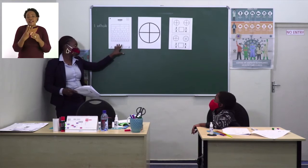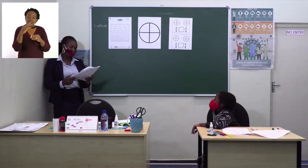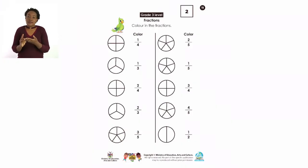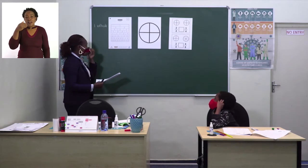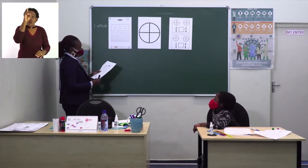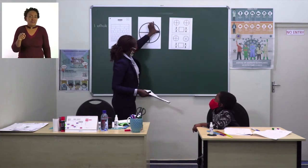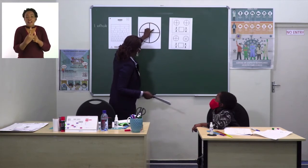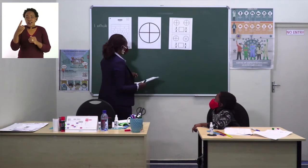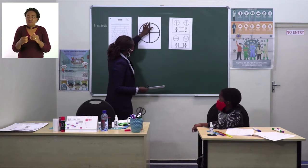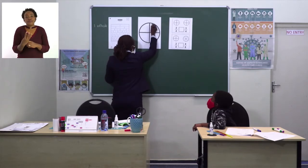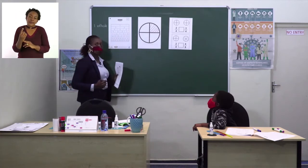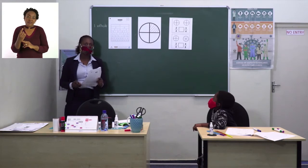Grade threes, you can use it for revision. Let's now turn to page 11, where we are going to color the fractions. I have a picture here — it's a pizza. We want to color one over four, which means my friend here eats one part — one part out of four. We don't say one over three; we say one out of four. So we color one over four — it will be one over four like this.